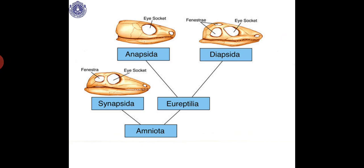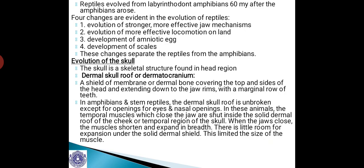From Eureptilia there developed Anapsids and Diapsids. In Anapsids there is no arch or fossa — fossa are totally absent. Whereas in Diapsids, a pair of fossa are seen, because of which they are referred to as Diapsids.